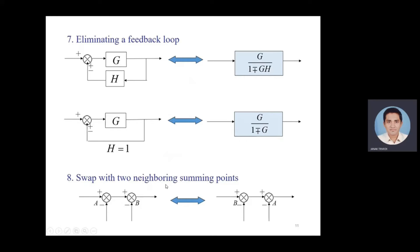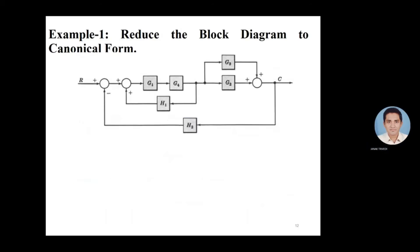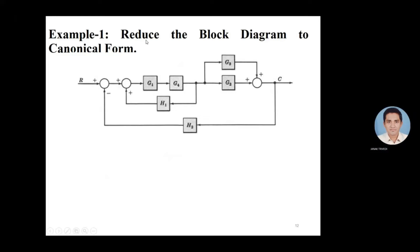Swapping two neighboring summing points a and b: the answer is the same because summing points indicate the algebraic sum, so swapping gives the same result. Now let's understand the concept with an example — reduce the block diagram to canonical form. Here G1 and G4 are in cascade, G3 and G2 are in parallel, and G1*G4*H1 is in the feedback loop.